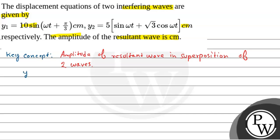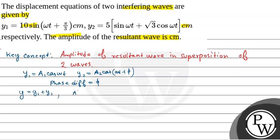Let us say the first wave is y1 equals A1 cos(ωt), and the second wave equation is y2 equals A2 cos(ωt + φ). The phase difference between them is φ. From superposition of y1 and y2, the resultant amplitude A' will be: root over of A1² + A2² + 2·A1·A2·cos(φ).